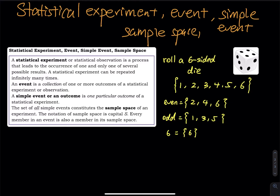A simple event or outcome is one particular outcome of a statistical experiment. Looking at the list — one, two, three, four, five, six — this experiment has six simple events. The set of all simple events constitutes the sample space of an experiment, and we use capital S for sample space. Sample space is basically everything — you list all the possible outcomes. An event is when you are looking for a specific outcome within the sample space.